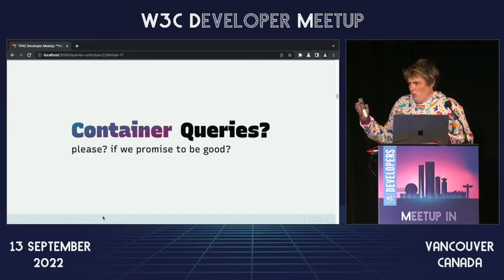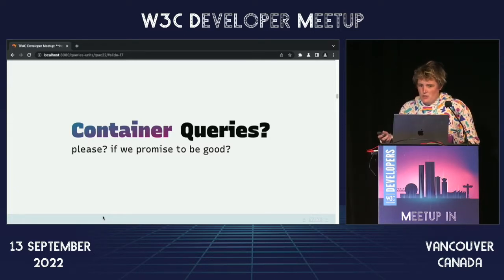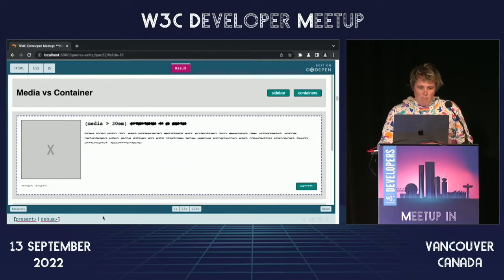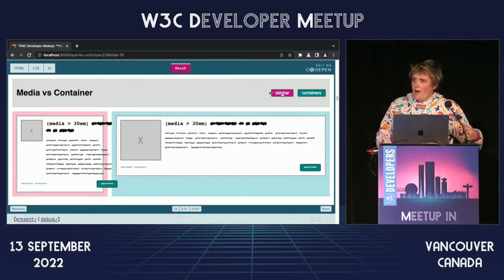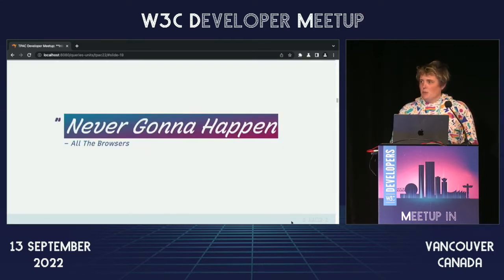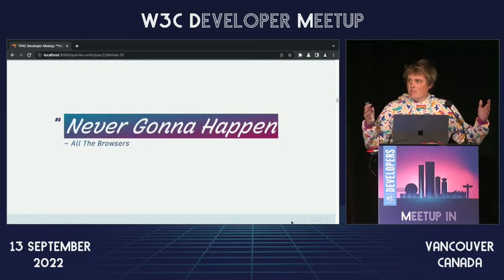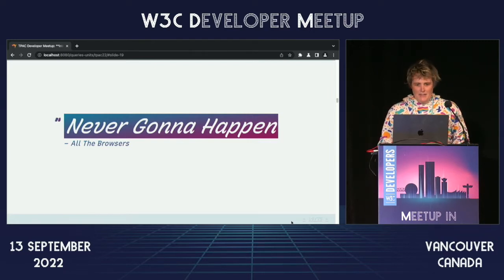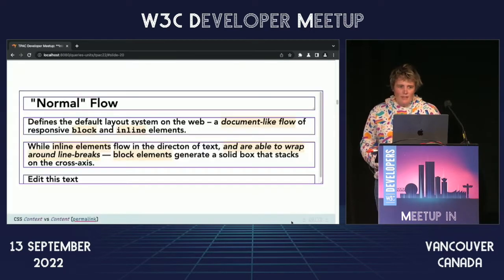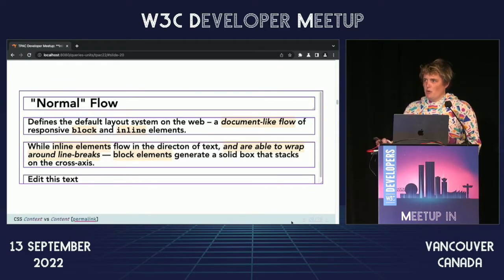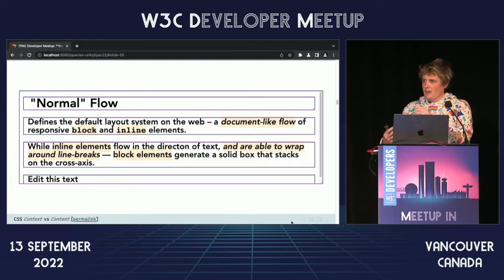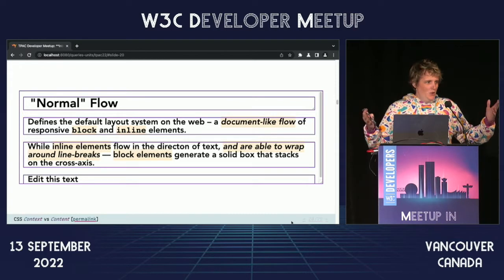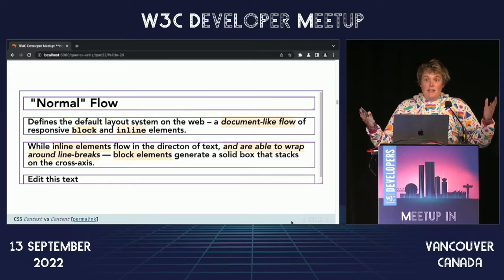Right away everybody thought, what about container queries? Wouldn't it be cool if we could measure containers? It would be nice if we could have a component and put it in a sidebar and it would lay out differently for the sidebar. But no, that's not possible. It's never going to happen. The reason it's not going to happen is because of normal flow — because the box sizes the content and the content sizes the box. What are you going to measure? What are you going to change? How is it going to work? It doesn't work.